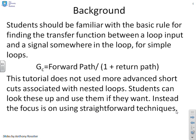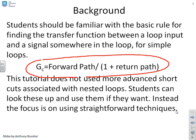Let's look at the background. Students should be familiar with the basic rule for finding the transfer function between a loop input and a signal somewhere in the loop. This is the typical type of rule that we're going to use: that the transfer function between a loop input and the signal in the loop is the forward path between the loop input and the signal divided by one plus the return path where the return path is everything else in the loop.